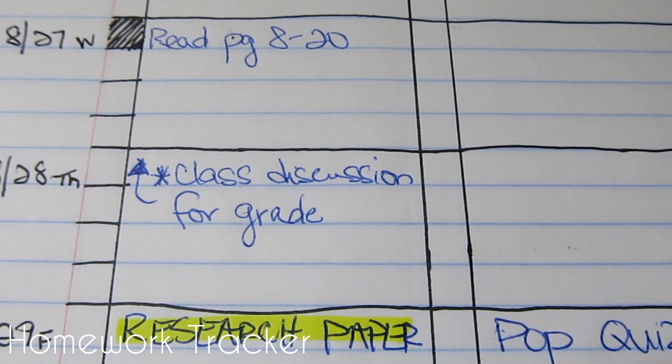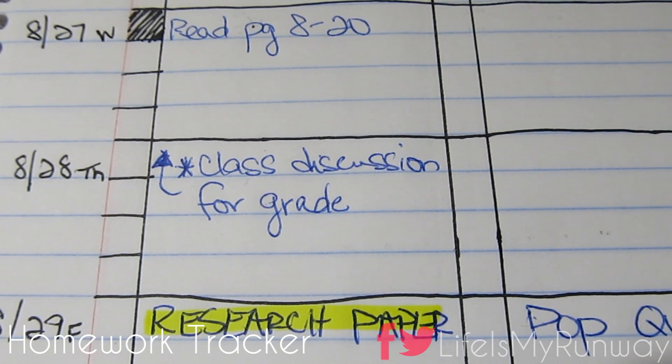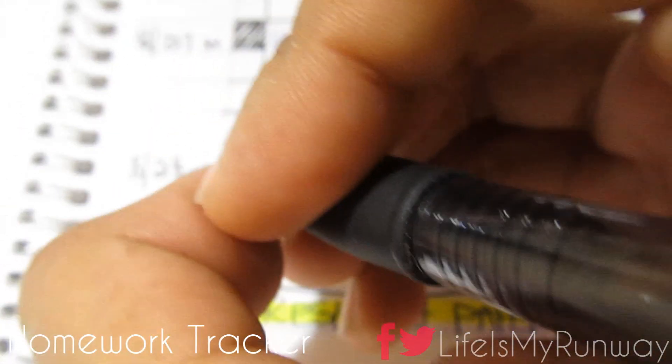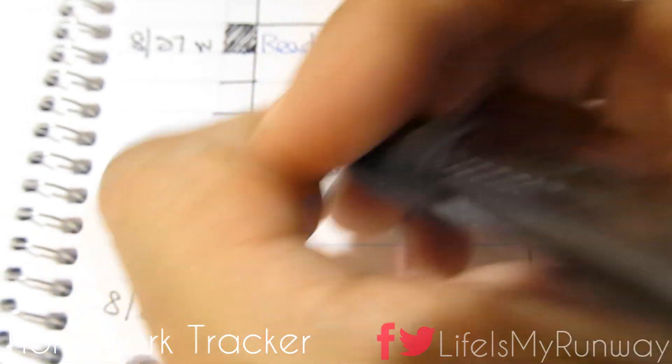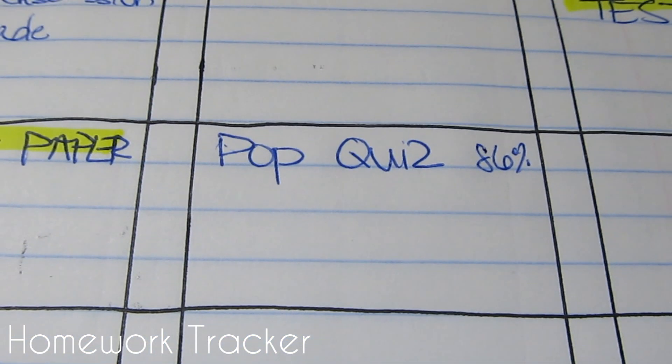Next up is the homework planner. This was my preference in school because it allowed me to see up to two weeks worth of work and it had everything for one class in one line. So it made it so much easier for me to keep track of everything that I needed to do.